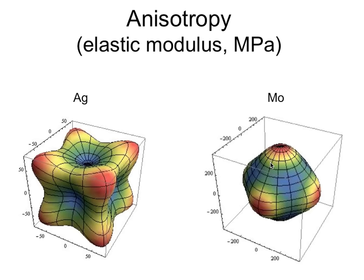The anisotropy of a crystal leads to variations in stiffness — the modulus varies with the direction along which it is measured. Another feature is that these images have symmetry. Both silver and molybdenum are cubic metals, and you can see that properties along certain directions are exactly equal. In other words, even though the property varies as a function of orientation, along equivalent directions they might be identical because of symmetry.